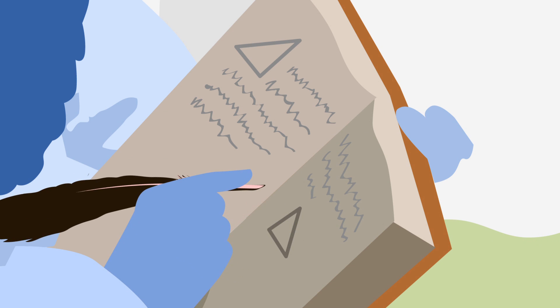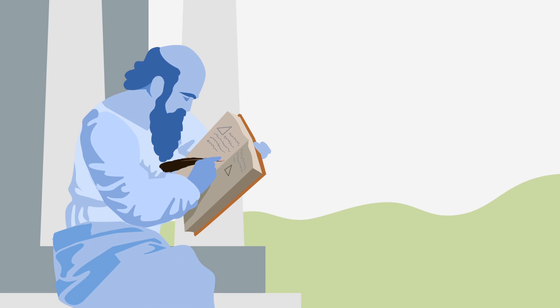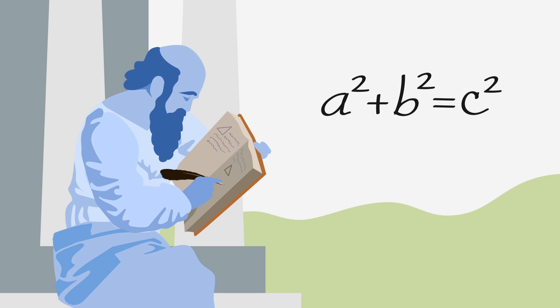You know who loves right triangles? Our favorite Greek, Pythagoras. He was so into right triangles that he came up with a whole theory, or theorem as they say, about them.